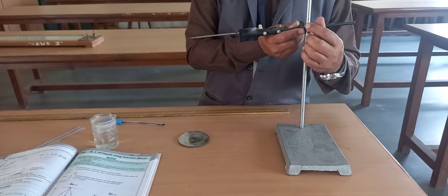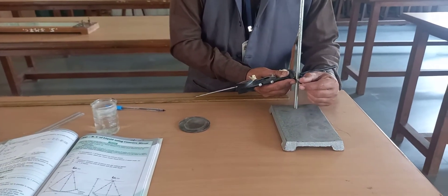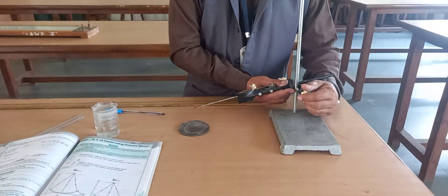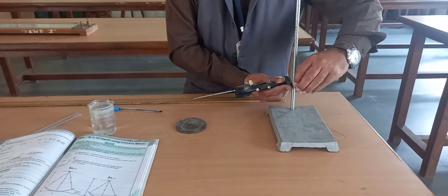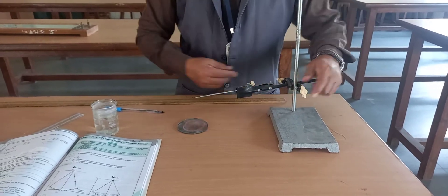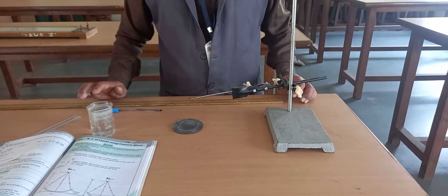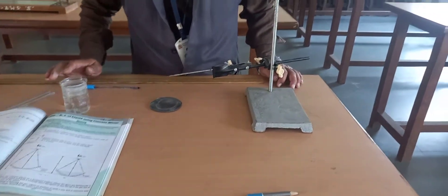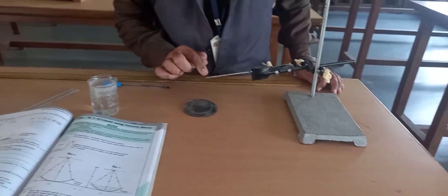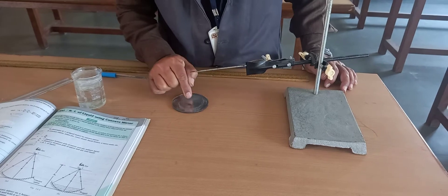Lower the index pin such that it is just above the center point of the mirror. This center point is called the pole - the scientific word. The pole indicates the point of symmetry. If you see from the top, the tip of the index pin should be exactly at the center point.